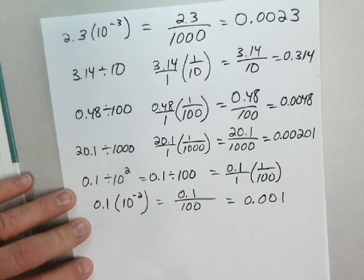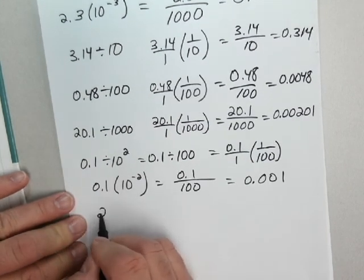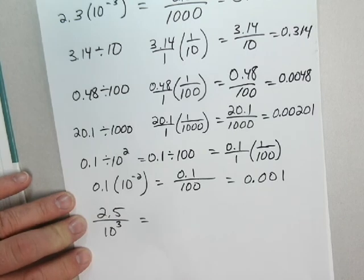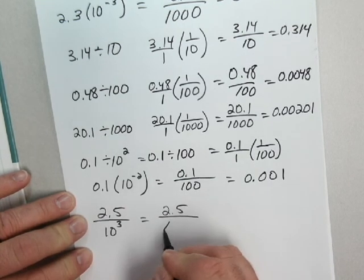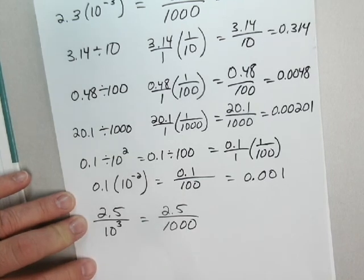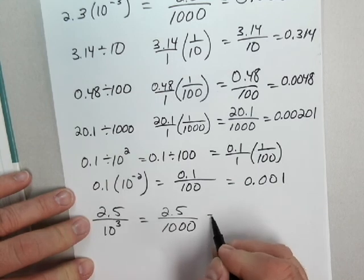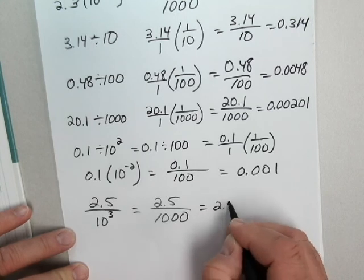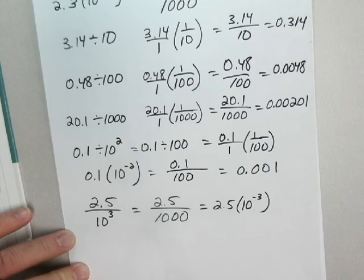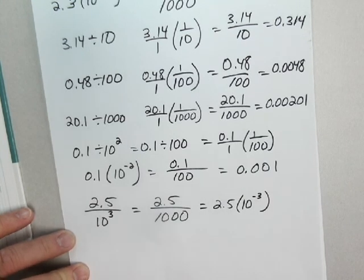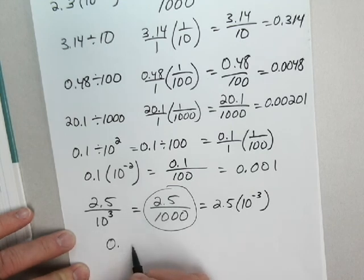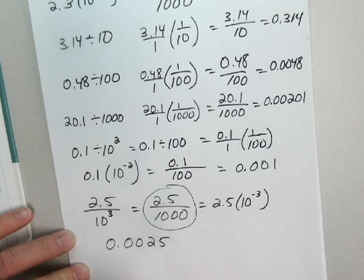And finally, the last problem on example 2 here. 2.5 divided by 10 to the power 3. Well, 10 to the power 3 is 1,000, so it's 2.5 divided by 1,000. Really no reason to write it any different than that, but just to play around with what we've learned here about these exponents, I could call that 2.5 times 10 to the negative 3. Same thing as dividing by 10 to the positive 3. This is the easiest one for us to visualize. I'm going to divide by 3 powers of 10. That means my decimal is going three places to the left. So I'll have two leading zeros, and then my 2, 5.